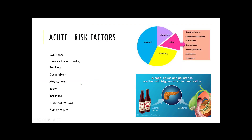There are many potential causes of acute pancreatitis, with alcohol abuse and gallstones being the most common. Some of the other causes include smoking, elevated triglycerides, certain medications, and injury or trauma to the pancreas. Other health problems like infections, cystic fibrosis, and kidney failure can also lead to pancreatitis.